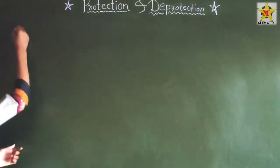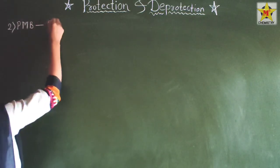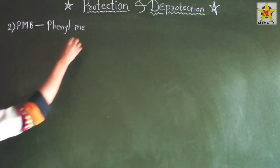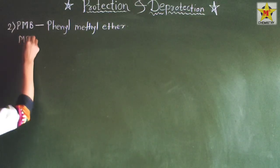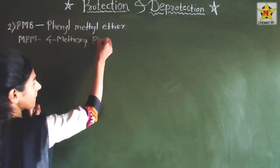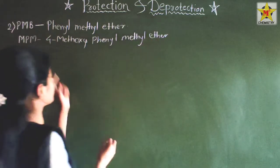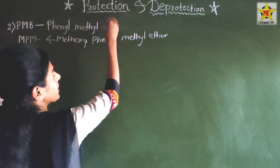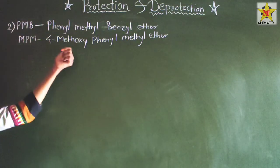The second protecting group is PMB, which means para-methoxybenzyl. PMB is also called MPM, which means 4-methoxyphenylmethyl. This group is also referred to as benzyl ether with a methoxy substituent. PMB and MPM refer to the same protecting group.